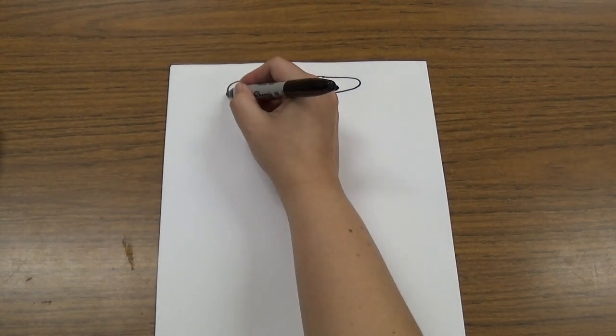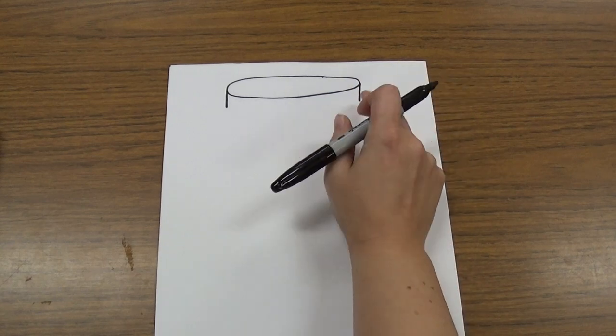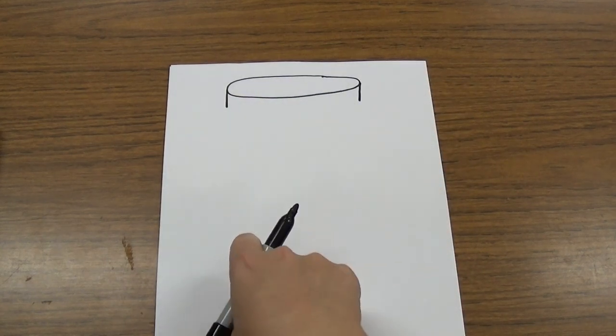Then I'm going to draw a line down one side and a line down the other side. They're just two short little lines that go down.